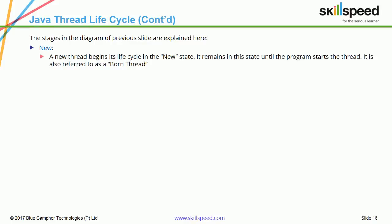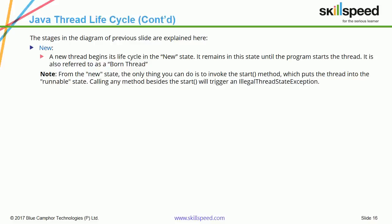Let us go through the stages of the thread lifecycle in detail. New: a new thread begins its lifecycle in the New state and remains there until the program starts it — it is also referred to as a born thread. Note that from the New state, the only thing you can do is invoke the start() method, which puts the thread into the Runnable state. Calling any method besides start() will trigger an IllegalThreadStateException.